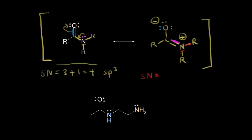Here's a sigma bond, here's a sigma bond, and in our double bond one is a sigma and one is a pi — so we have three sigma bonds around our nitrogen and zero lone pairs of electrons. Three plus zero gives a steric number of three, which implies three hybrid orbitals and sp2 hybridization, giving a trigonal planar geometry around that nitrogen. Here we've shown our electrons being delocalized due to resonance.